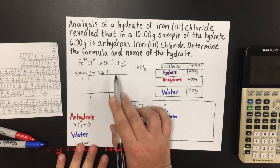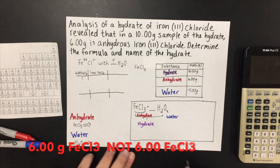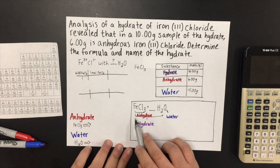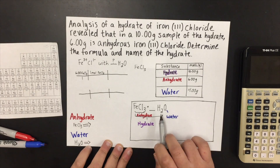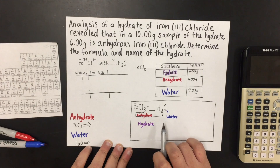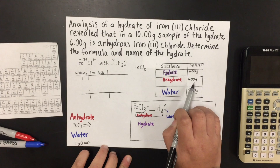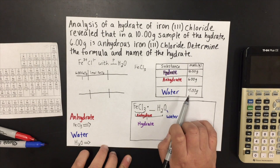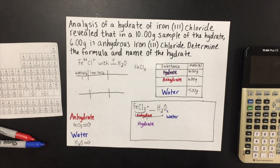In smaller terms, we're trying to find the number of water molecules present in this sample of iron(III) chloride. The different parts of the hydrate formula include the anhydrate — in this case, iron(III) chloride — and the water together, which makes the hydrate. If the total mass of the hydrate is 10 grams and 6 grams are the anhydrate, then 4 grams must be the mass of the water present.